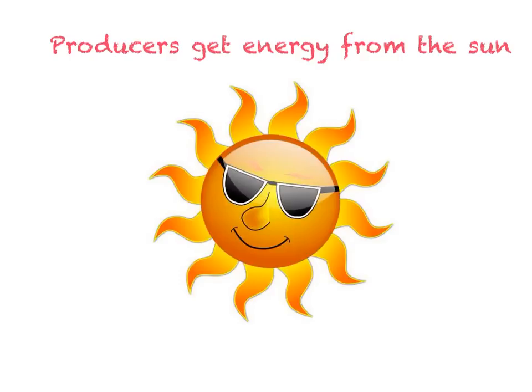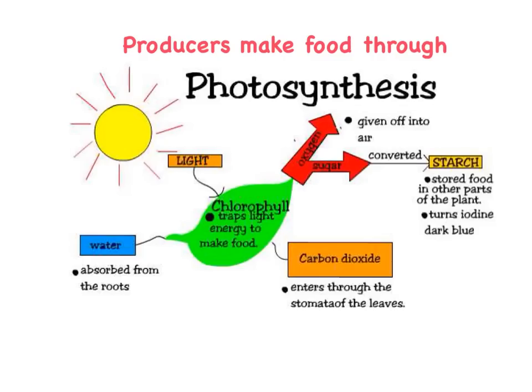Within an ecosystem, organisms are classified whether they are a producer, a consumer, or a decomposer. Producers get their energy from the sun. Producers make their food through photosynthesis. The plants take in the sunlight, the water, and the carbon dioxide, and give off oxygen. This oxygen can also be converted into starch, which is stored food in other parts of the plant.